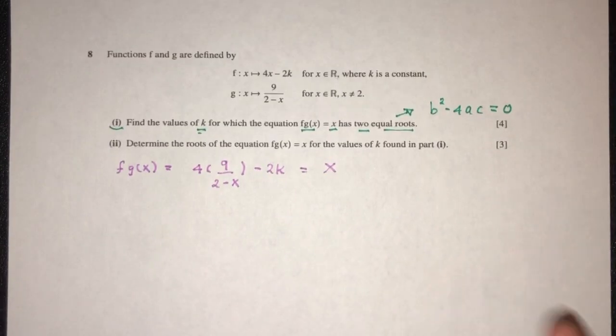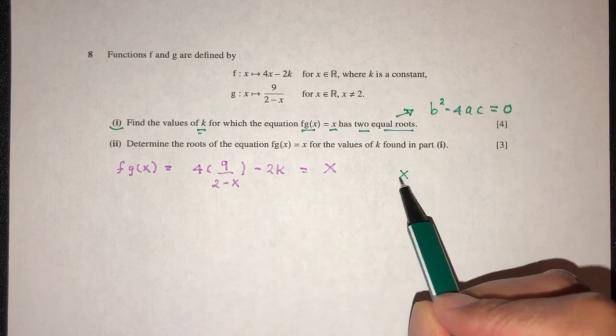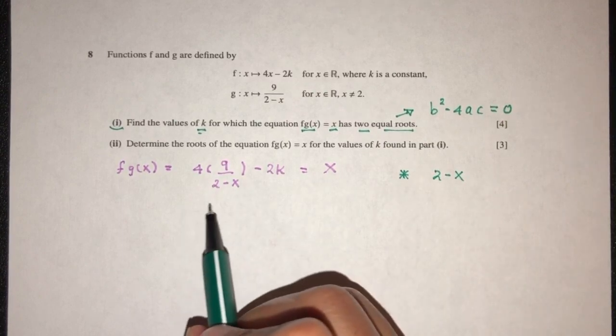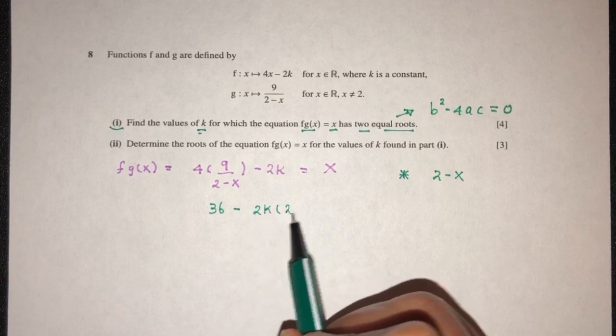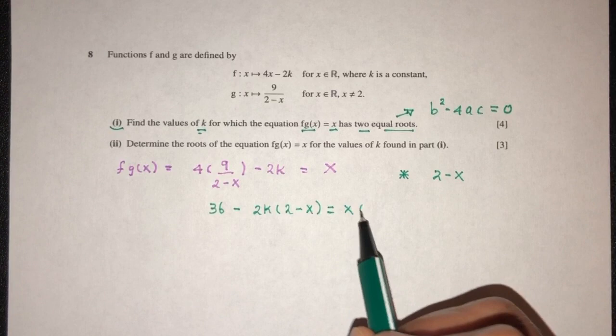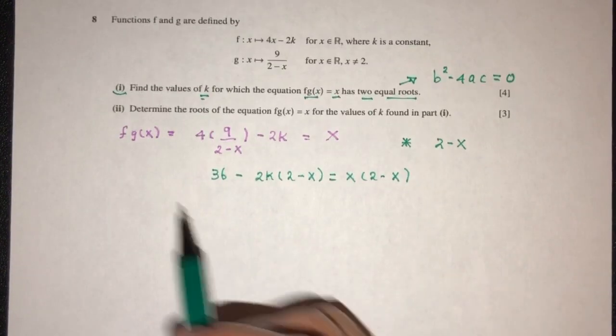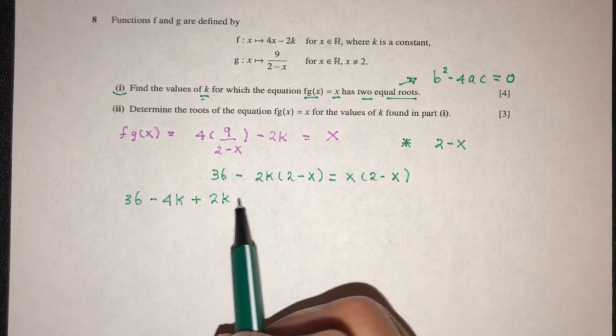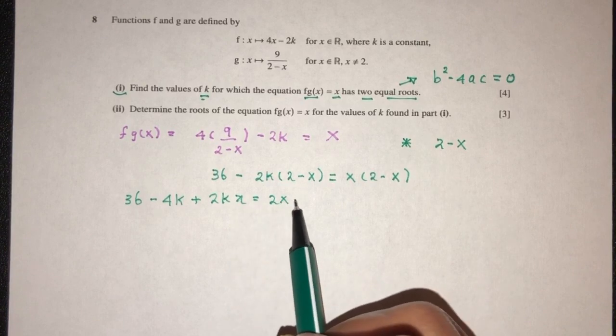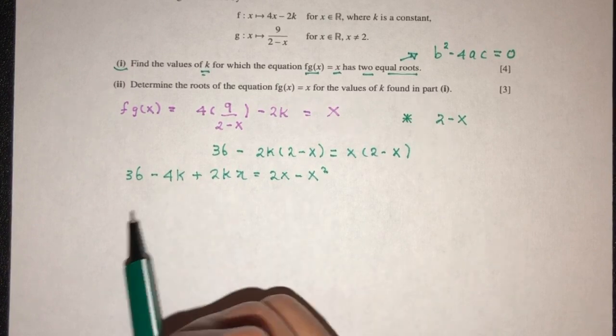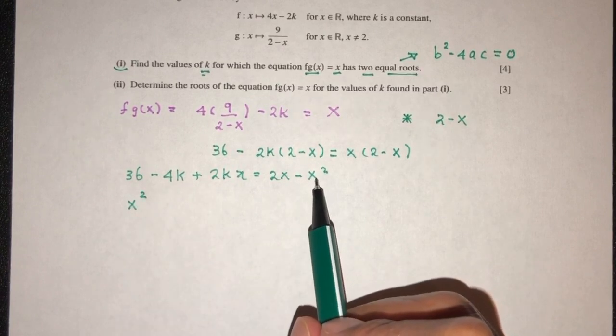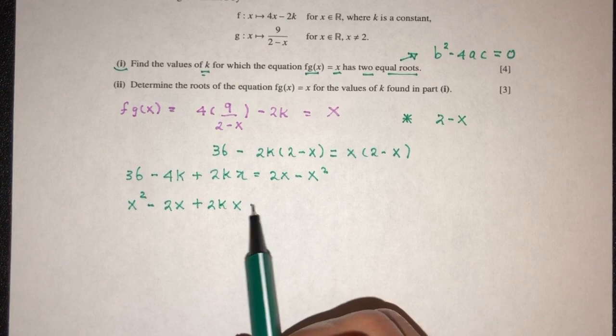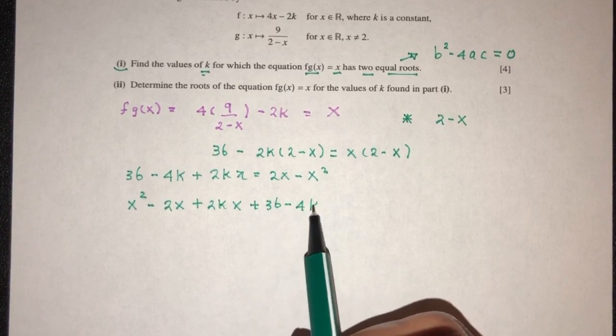Now we would like to simplify this. So we have to multiply by the denominator here. Multiply everything by (2 minus x) because we want to eliminate the value at the bottom. That will become 36 minus 2k times (2 minus x) equal to x times (2 minus x). So simplify. That will be 36 minus 4k plus 2kx equal to 2x minus x². Let's send everything to one side. You will have x² and you will have minus 2x plus 2kx, then we have plus 36 minus 4k equal to zero.